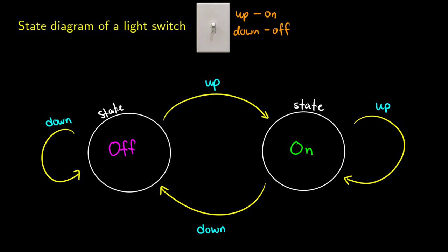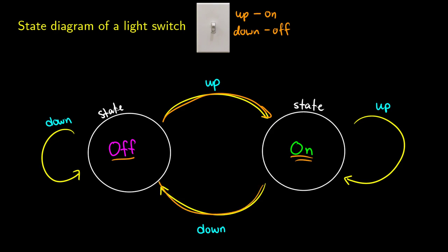For example, if we start in the off position and we keep the switch down, it goes back to the off position — it doesn't change. But if we start in the off position and we flick the switch up, then we go into the on state. The light is on. And you can see what happens on the right side as well: if it's on and it stays up, it still stays on. But if we start in the on position and we flick it down, then it goes off. This machine right here is just representing that light switch.